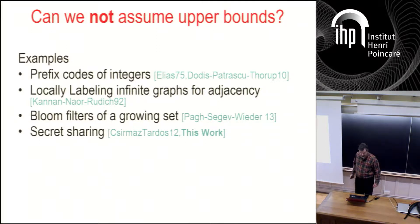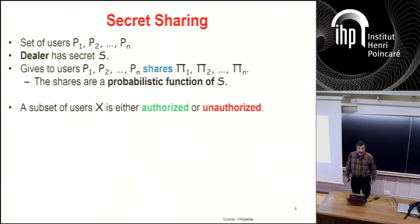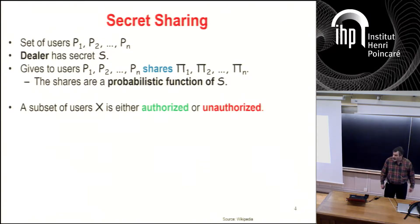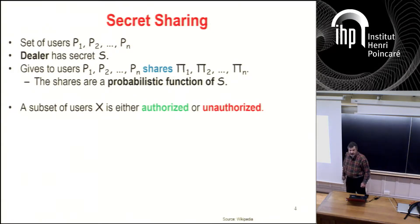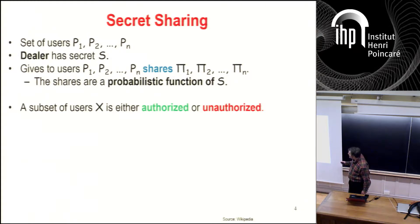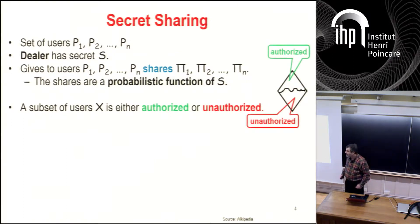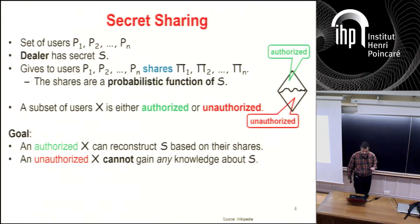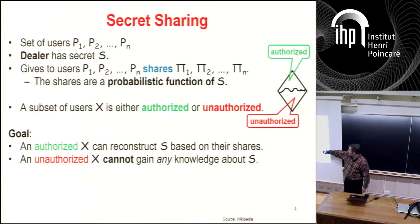In this work, we'll be talking about secret sharing. In a secret sharing scheme, you have a set of users P1 up to Pn. You have a dealer who has a secret. The dealer gives shares to users P1 up to Pn — these shares are a probabilistic function of the secret S. A subset of users is either authorized or unauthorized. The natural assumption is that once you're authorized, any superset is also authorized. Authorized sets can reconstruct the secret S given their shares, and unauthorized ones learn nothing.